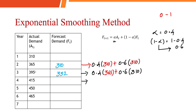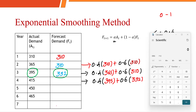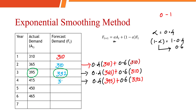To calculate the demand for the next period, we take 0.4 into the actual demand of 395 and the forecasted demand of 332. So 0.4 into 395 plus 0.6 into 332. This will give us 357, which we can round off to 357.